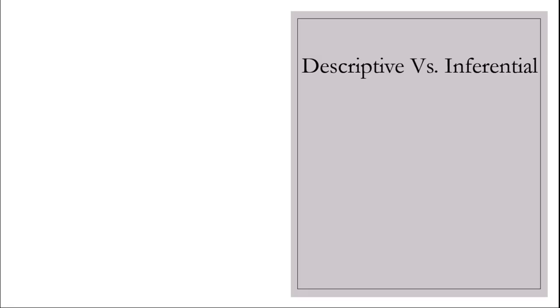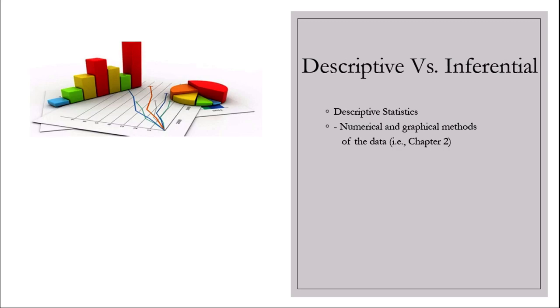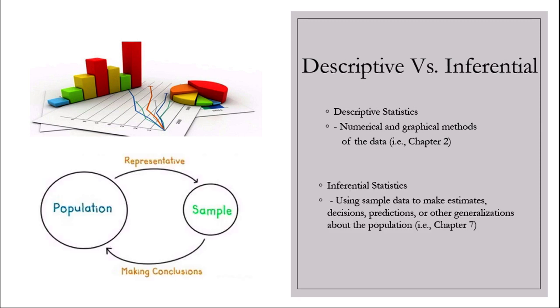Usually, the application of statistics can be divided into two broad areas: descriptive statistics and inferential statistics. For descriptive statistics, we use numerical and graphical methods of the data, like chapter 2. For inferential statistics, we use sample data to make estimates, decisions, predictions, or other generalizations about the population, like chapter 7.